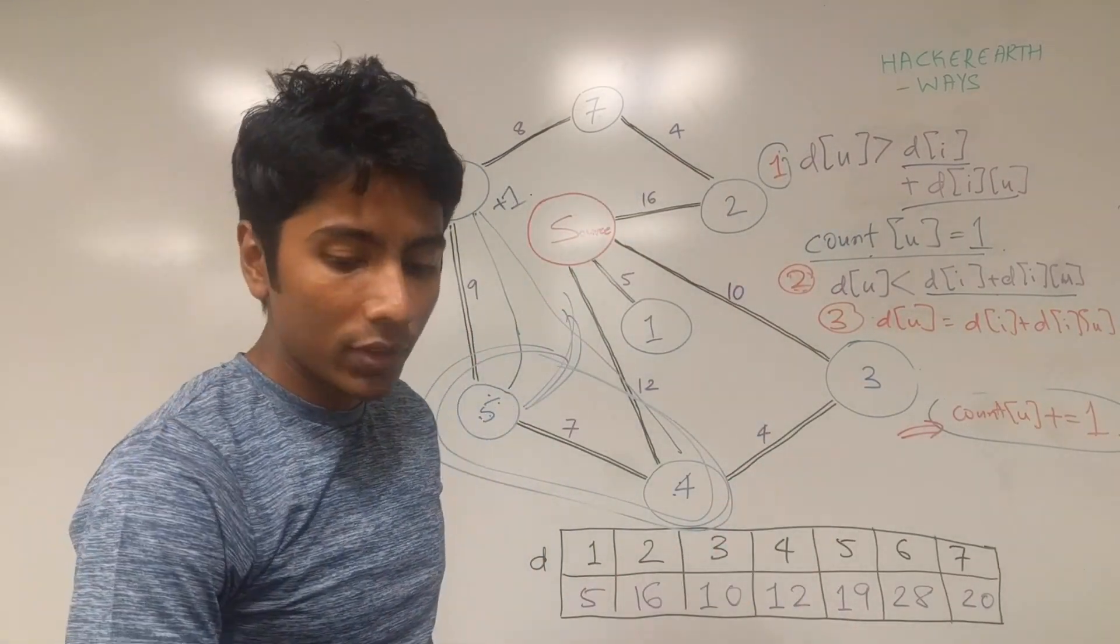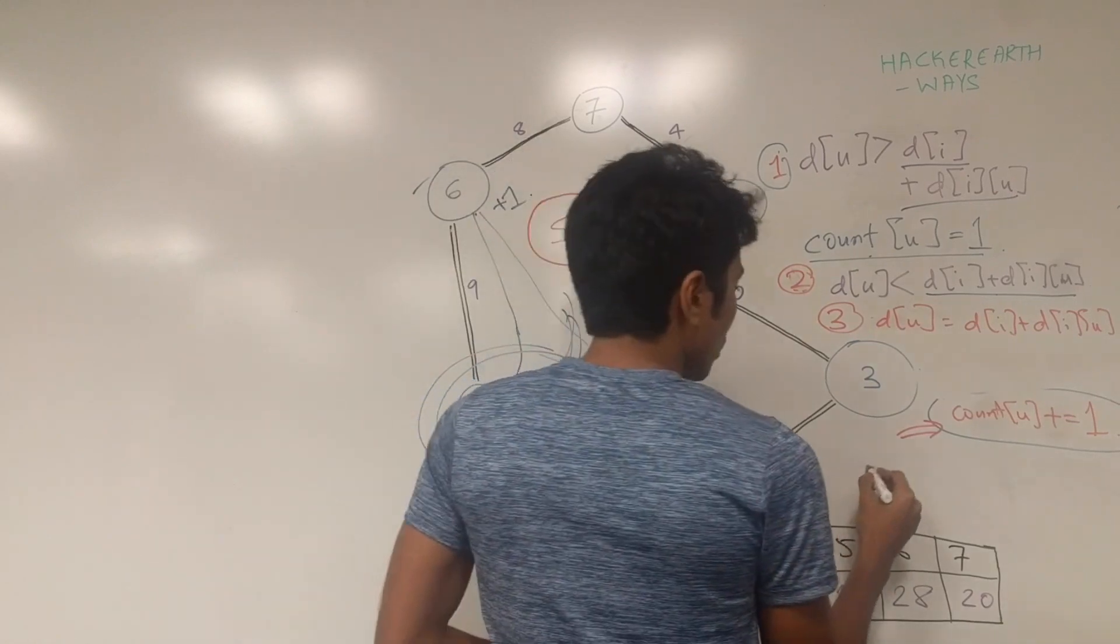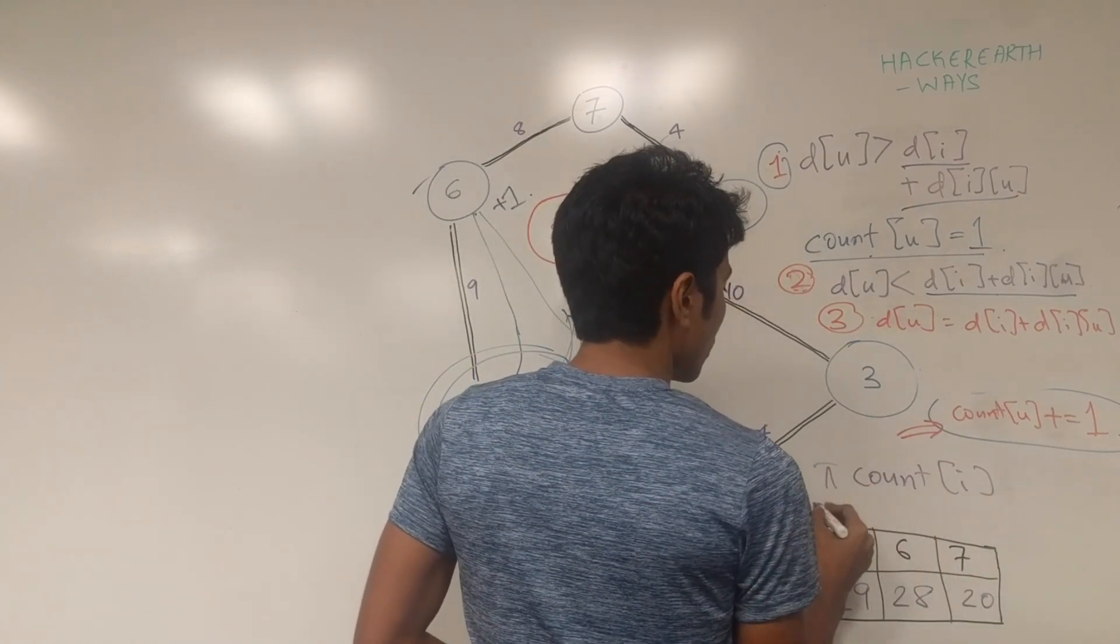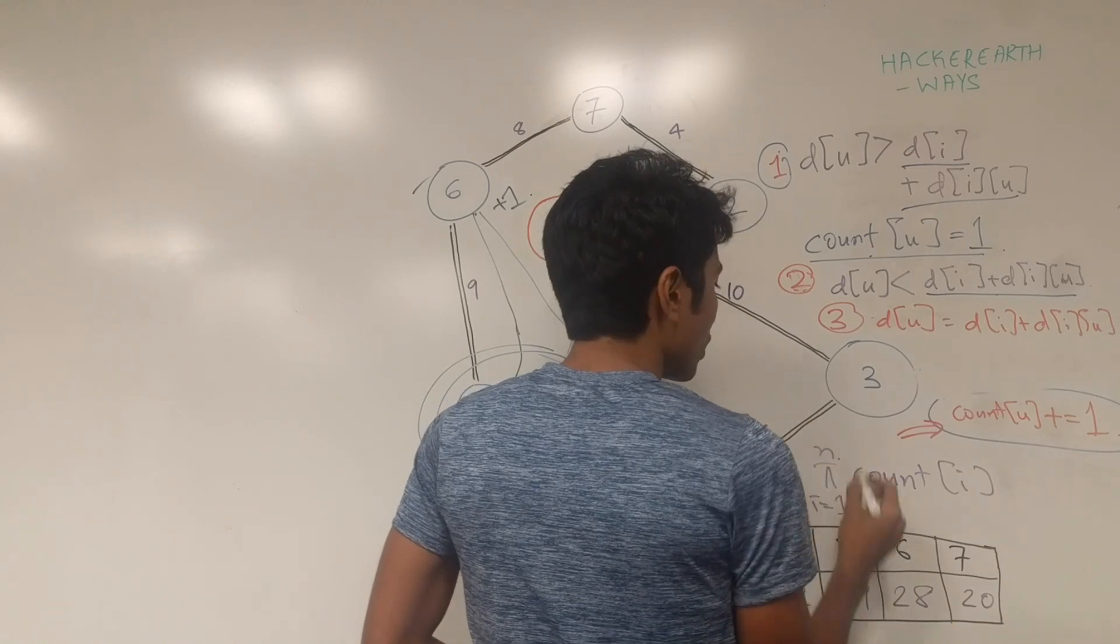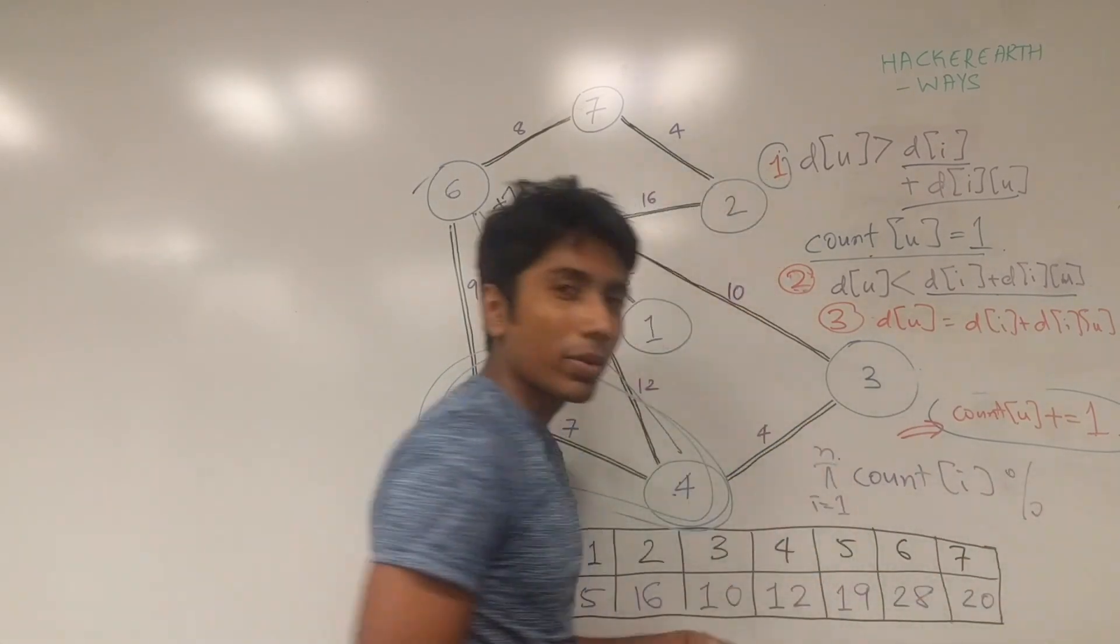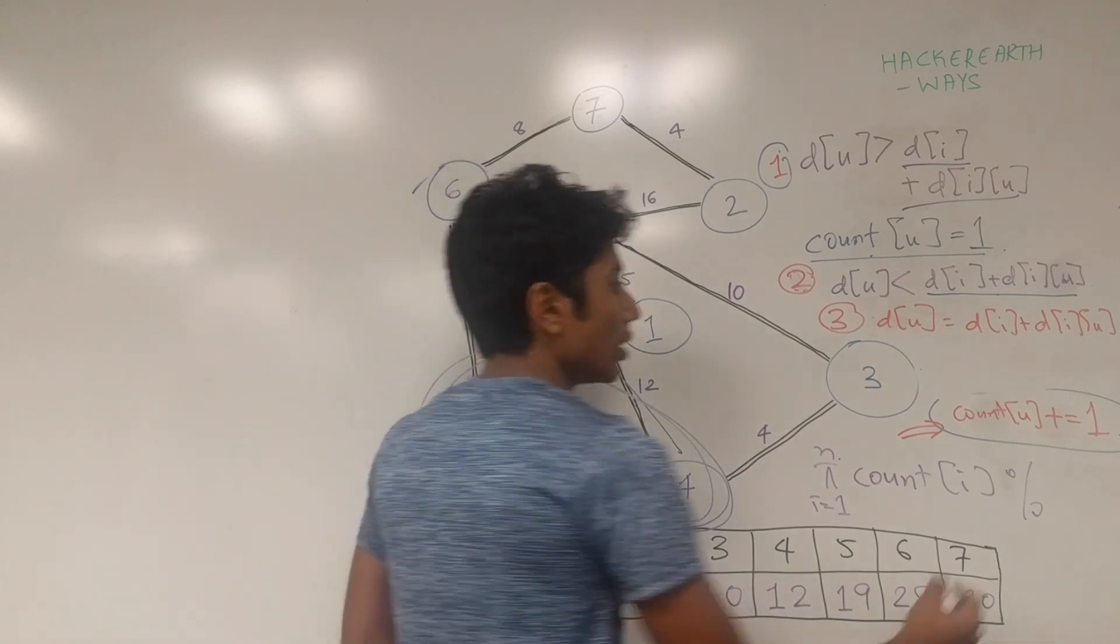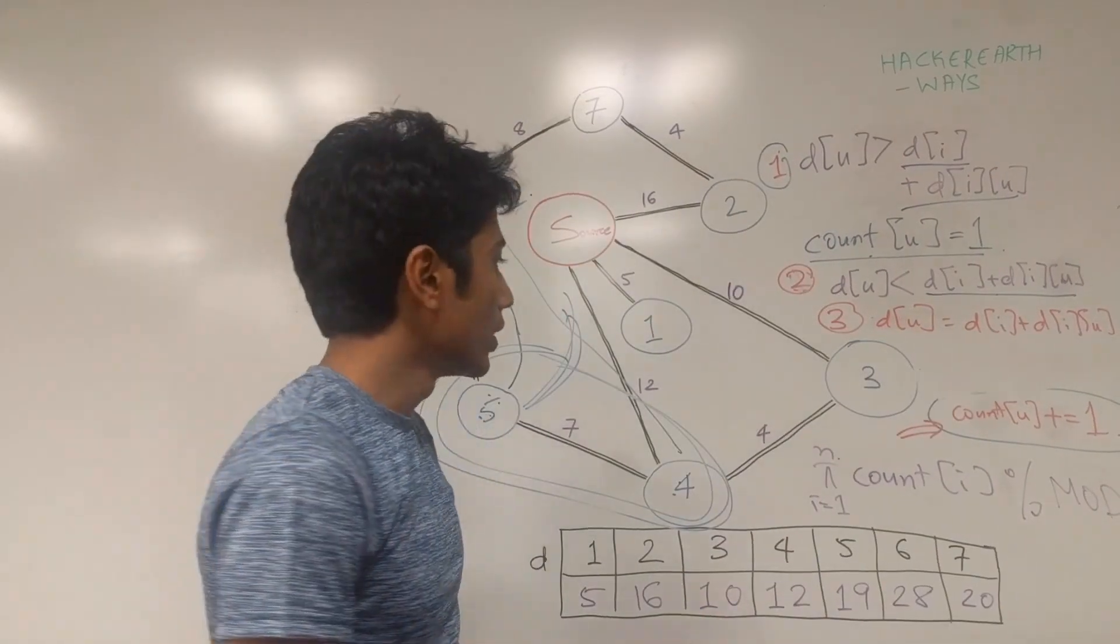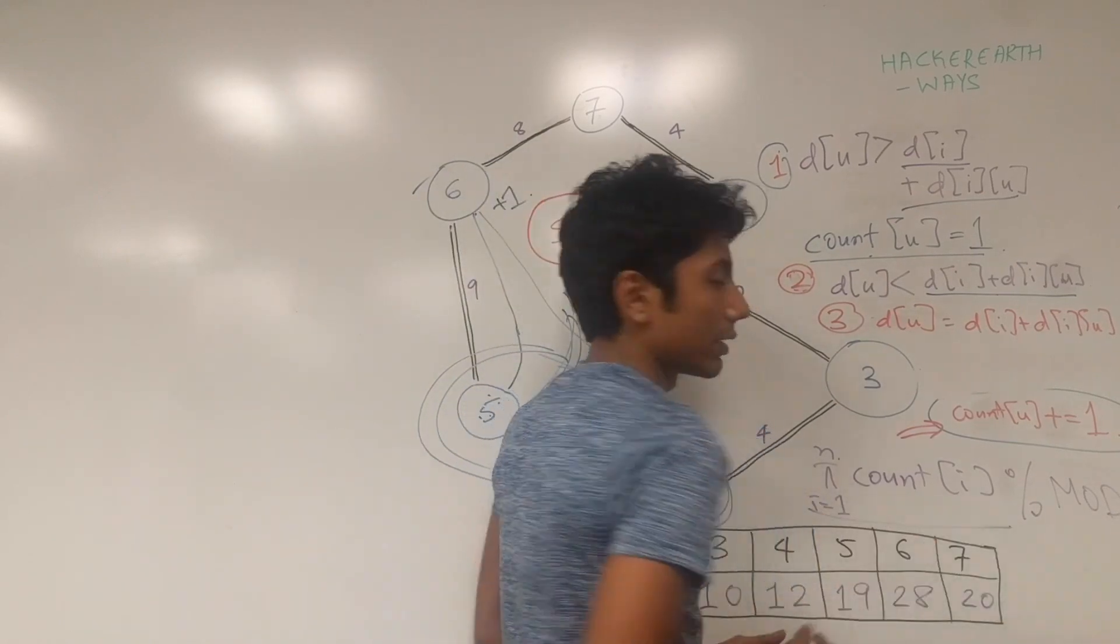And that's it. All you need to do after this is multiply all the counts from i equal to 1 to n and that will give you the answer. Of course this is going to be a large number. So in the competition there was a mod number given to us. I think some prime number and that was the answer that we needed to print out.